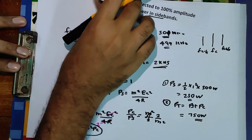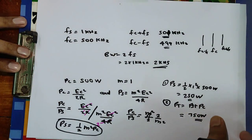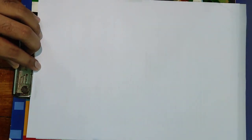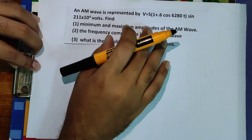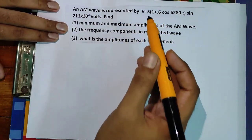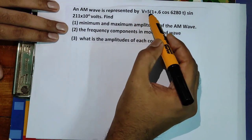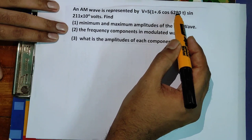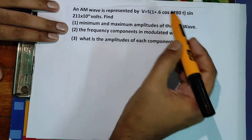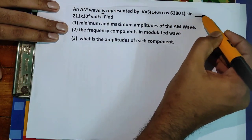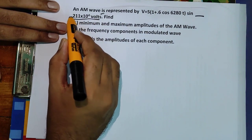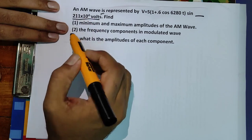Now let us solve the third question. An AM wave is represented by v = 5(1 + 0.6·cos(6280t))·sin(211 × 10⁴ t) volts.